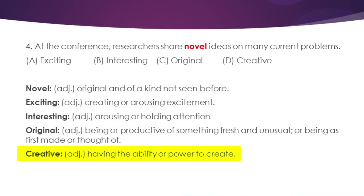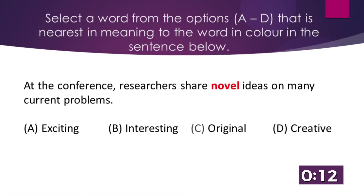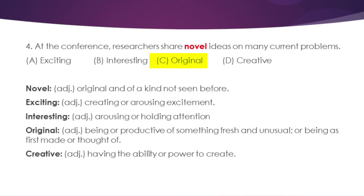Option D — creative — is an adjective meaning having the ability or power to create. The answer is option C, original, because novel means original and of a kind not seen before, and original means being productive of something fresh and unusual, or being as first made or thought of.